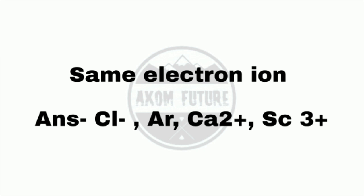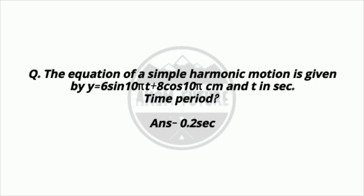Question 8: The equation of simple harmonic motion is given by y = A sin(10πt) cm, where T is in seconds. The time period is 0.2 seconds.